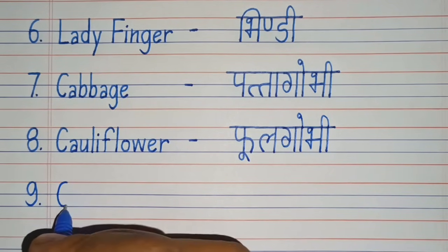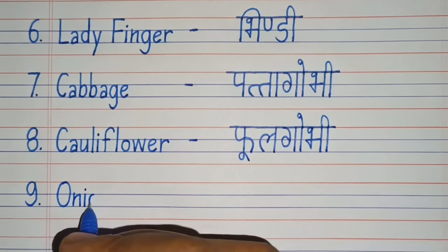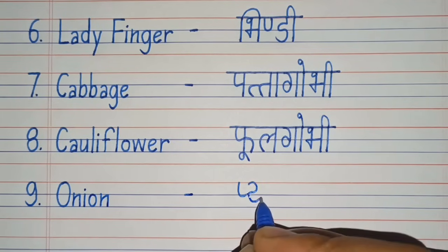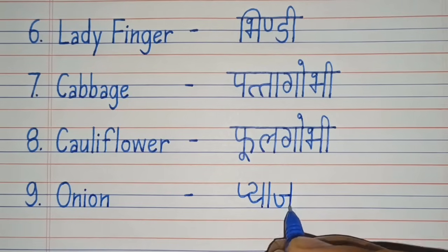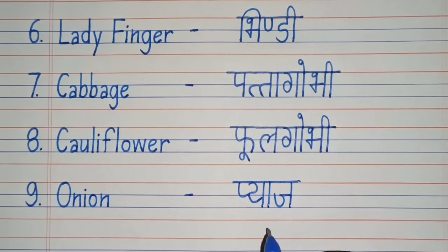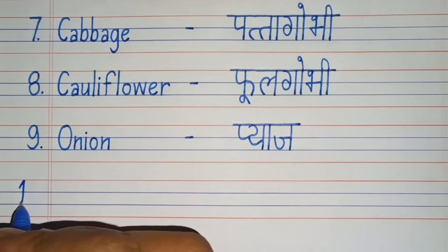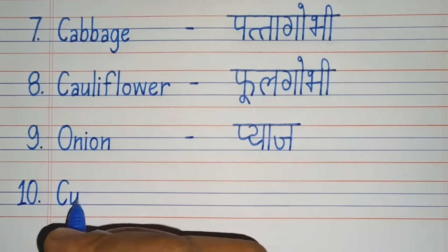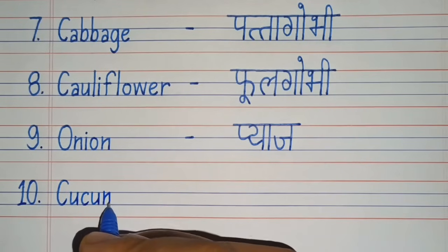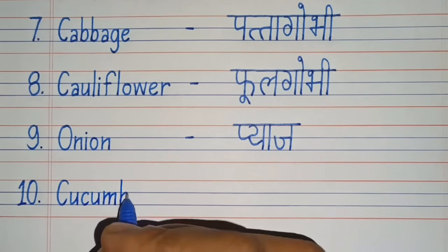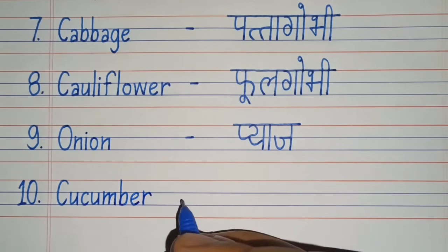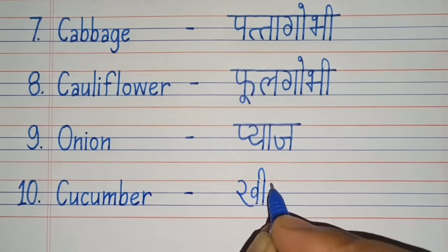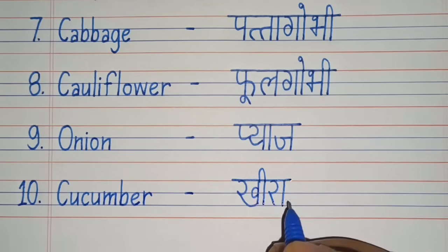Ninth number. O-N-I-O-N, Onion. Onion means Pyaz. Tenth number. C-U-C-U-M-B-E-R, Cucumber. Cucumber means Kheera.